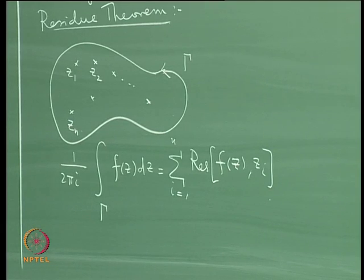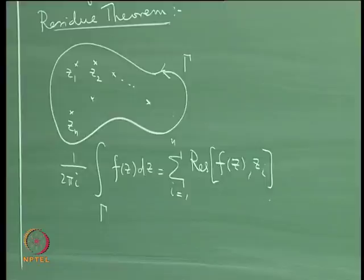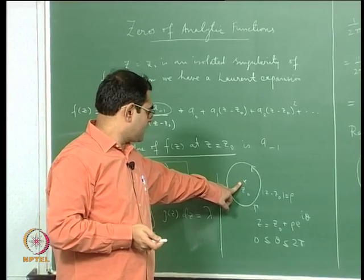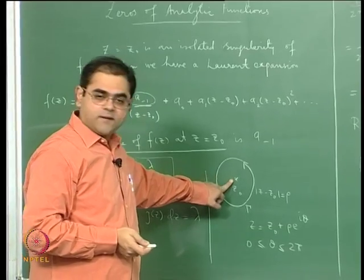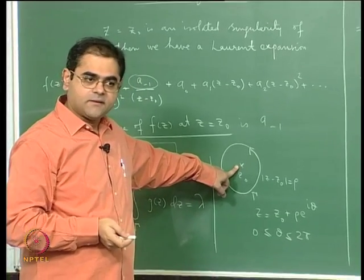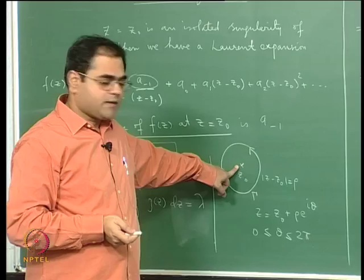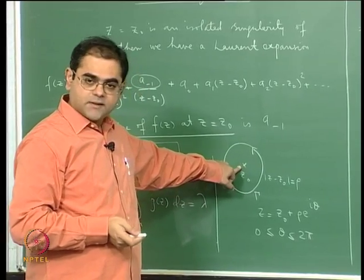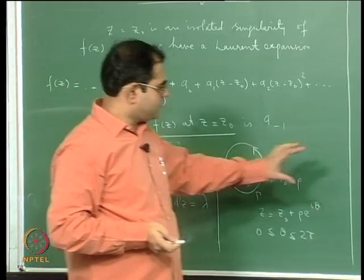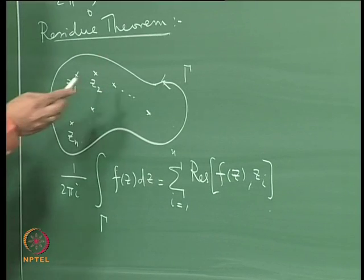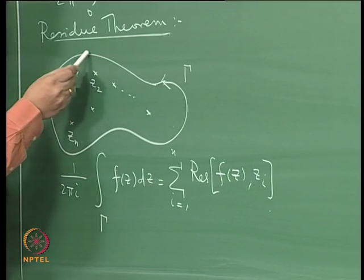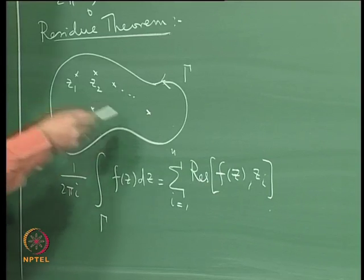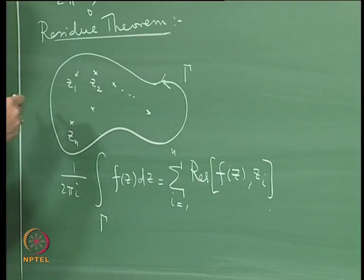What I have done here is taken the function to have isolated singularities and done the integration to end up with the sum of residues at those points. Of course you should assume there are no singularities on the contour over which you are integrating.